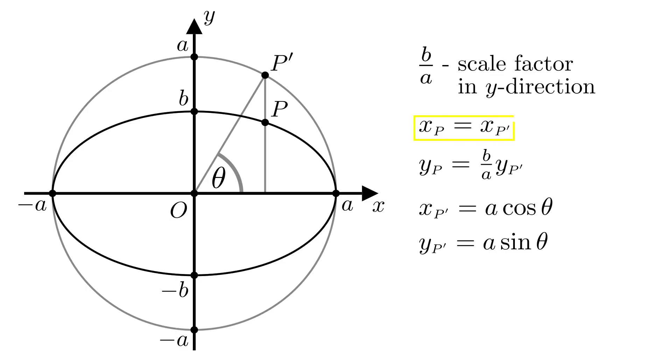Now the x-coordinate of p is equal to the x-coordinate of p', so it's equal to a times the cosine of theta. And the y-coordinate of p is equal to b over a times the y-coordinate of p', which is equal to b times the sine of theta.